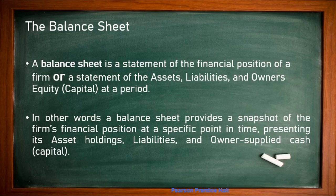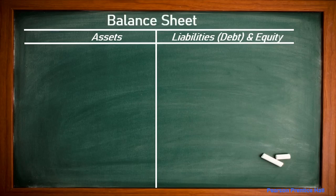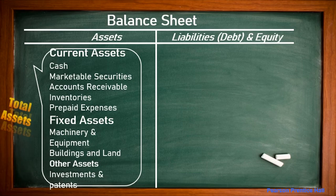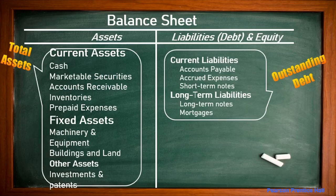The balance sheet is divided into two parts: assets and liabilities. Under assets: current assets include cash, marketable securities, accounts receivable, inventories, and prepaid expenses. Fixed assets include machinery, equipment, building, and land. Other assets include investments and patents. On the liability side, current liabilities include accounts payable, accrued expenses, and short-term notes.